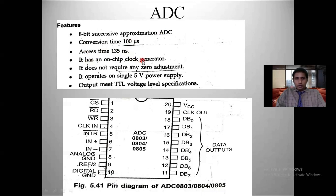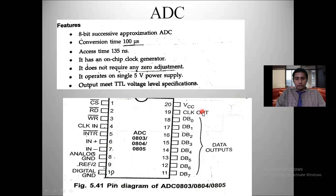Another advantage of this ADC IC is it has an on-chip clock generator, meaning the ADC itself has clock pins. In 8086 and even in DAC we take an external clock generator, whereas this ADC has an on-chip clock generator. There is a clock-in pin at pin number 4 and clock-out at pin number 19. These two pins are connected to external R and C elements to get a suitable clock frequency.